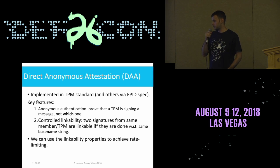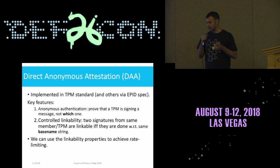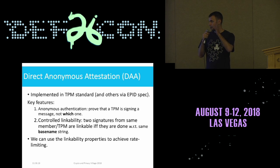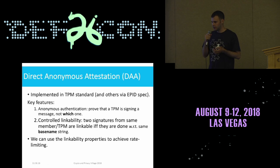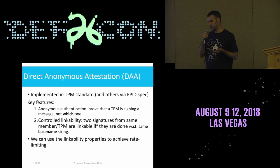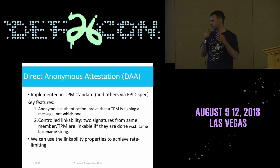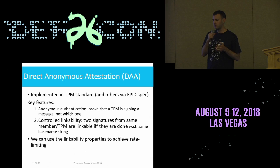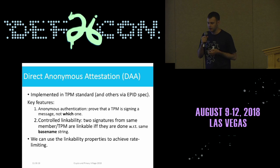The second important feature is controlled linkability. A device signs a message with respect to a base name string in a way that two signatures from the same member are linkable if and only if they are done with respect to the same base name string. For example, if a device always signs a message with the same base name, then all the signatures will be linkable. On the other extreme, if a device randomizes the base name and signs every message with a different base name, then all messages will be completely unlinkable. We'll see later how we can use these linkability properties to achieve our rate limiting needs.